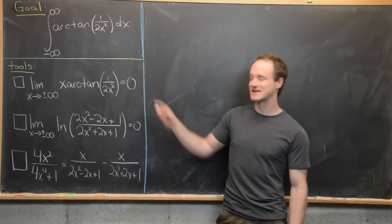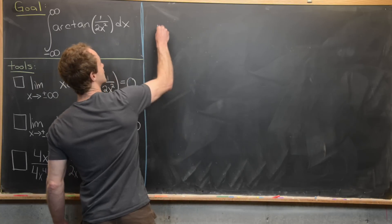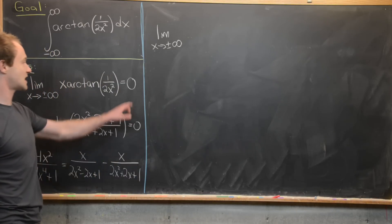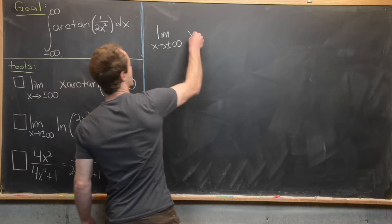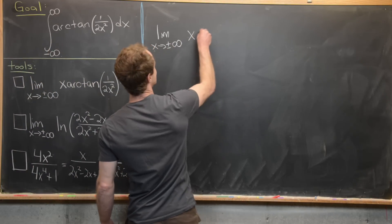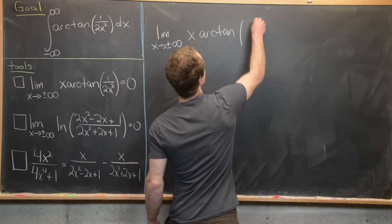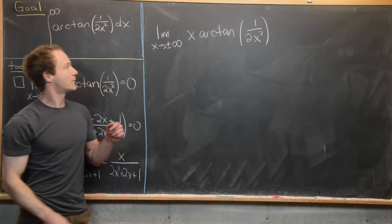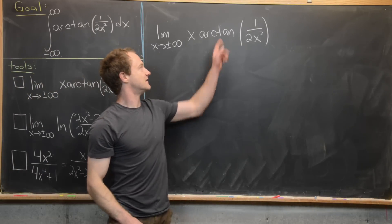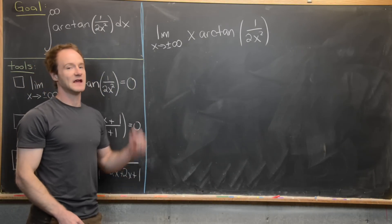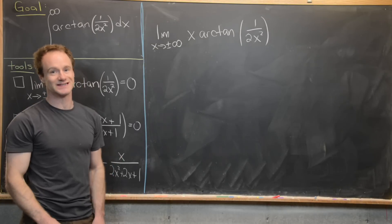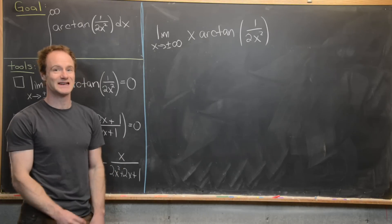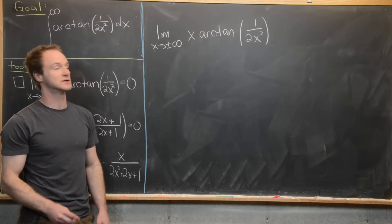Let's calculate the first limit. We have the limit as x goes to ±∞ of x times the arctan of 1/(2x²). The argument of the inverse tangent is approaching zero, and arctan(0) = 0, so this is of type infinity times zero — an indeterminate form — which means we can rewrite it and use L'Hôpital's rule.